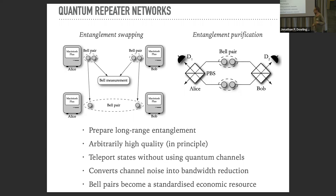With these two ingredients — entanglement swapping and purification — we can boost the quality of entangled pairs between endpoints and extend the range. That gives us what's called a quantum repeater network. Once we have that in place, we've got end-to-end entanglement links we can use as a universal resource for any quantum communication via teleportation.